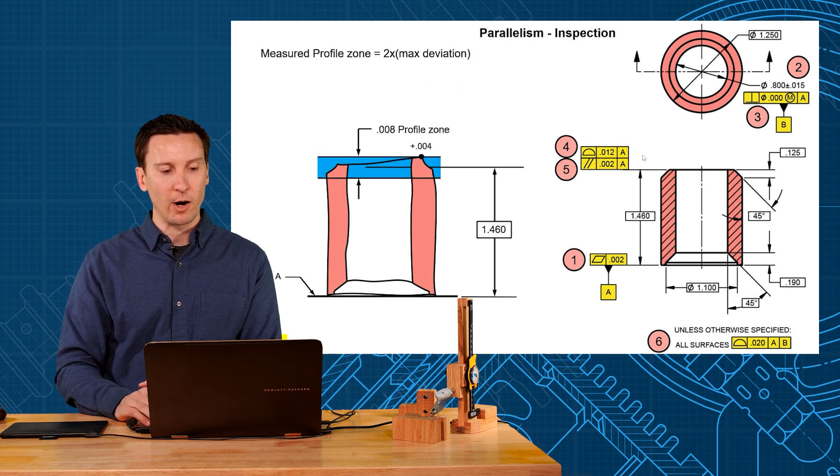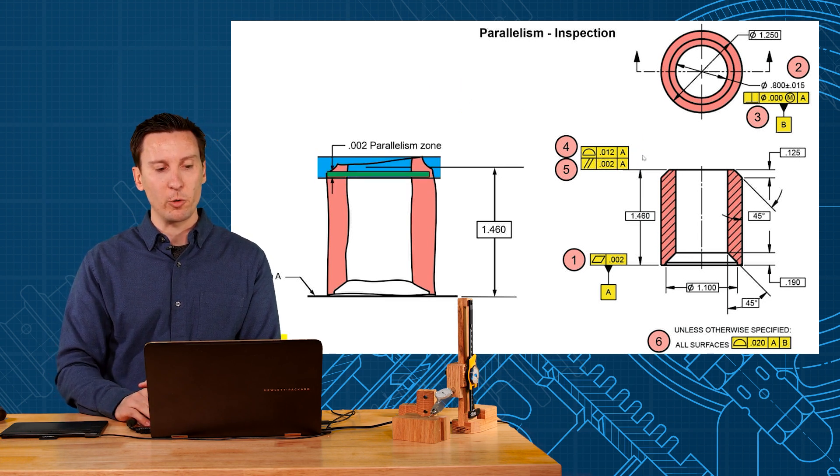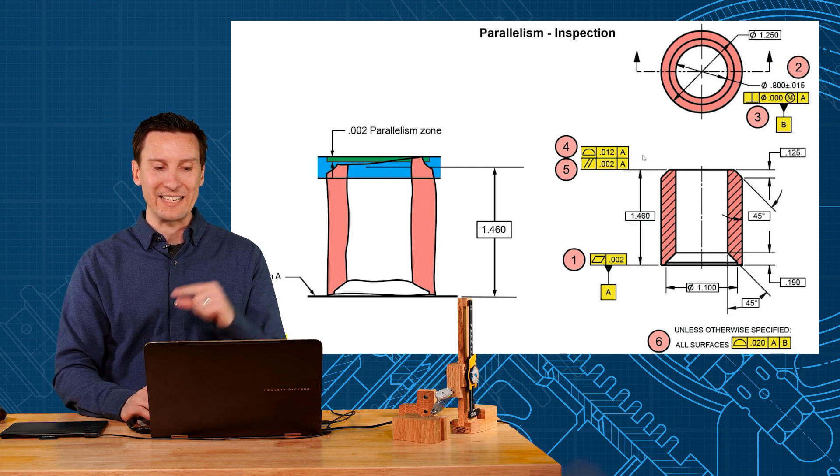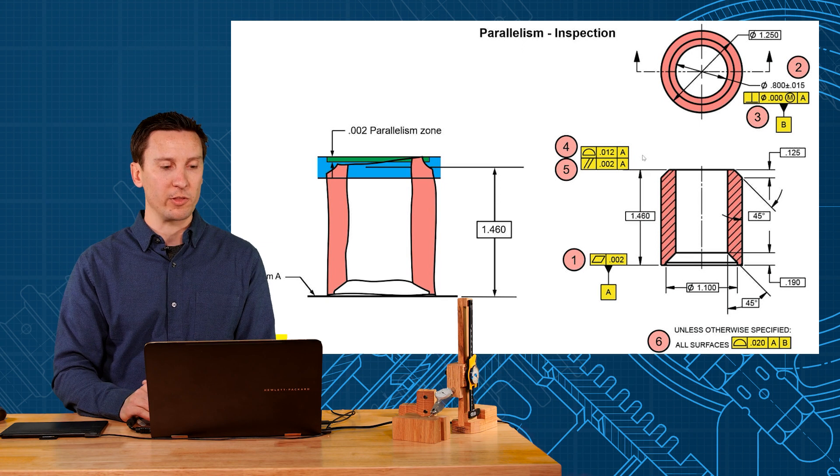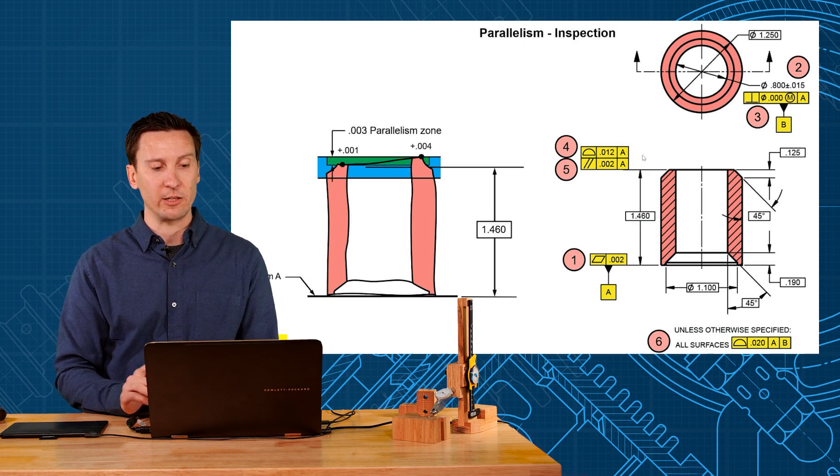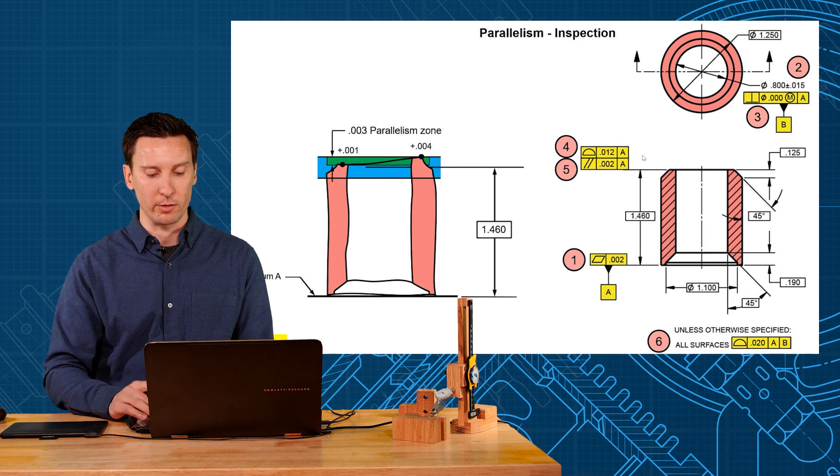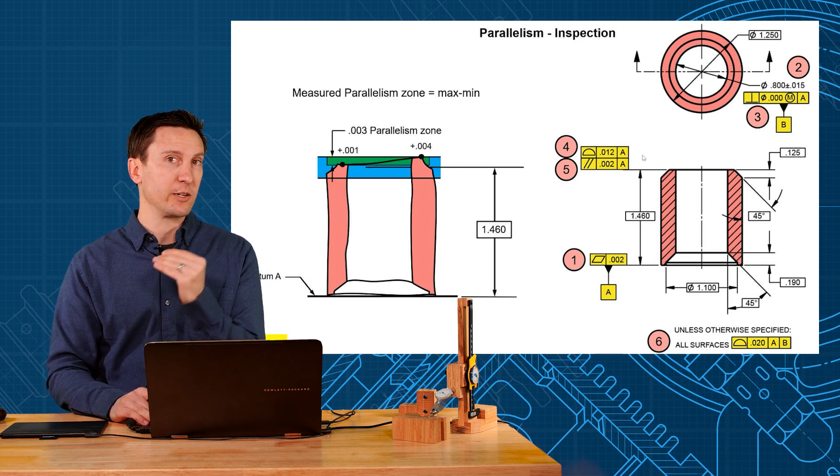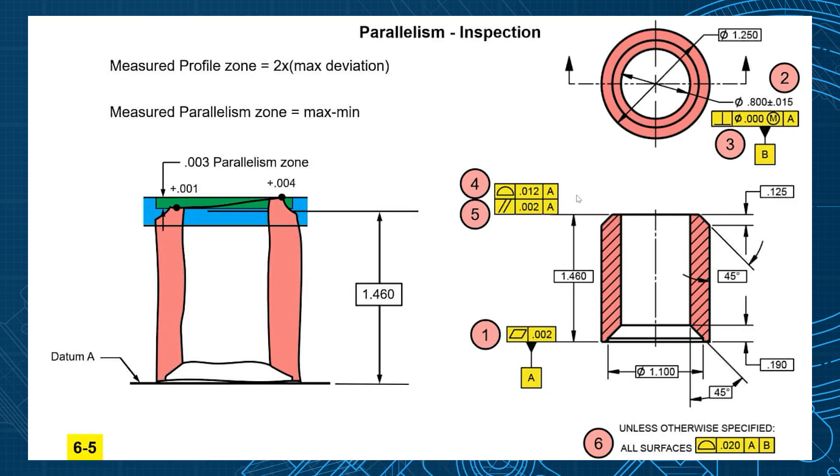The way parallelism is described is that floating zone. And so when that floats inside of the other one, I can't get that entire surface to fall within. So I'm going to have to expand that tolerance zone, and it's just containing those worst points of plus 4, plus 1. So that'll be parallelism. It's looking at your max point minus your min point. And don't get that confused with profile tolerance, which is 2 times that maximum deviation.